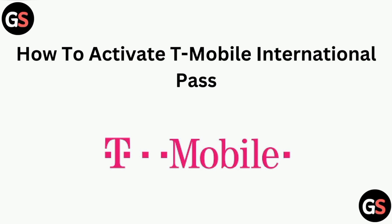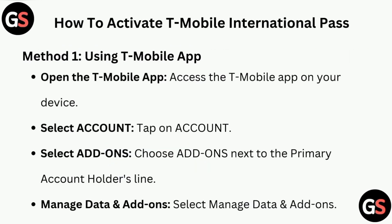Hi all. In today's video, we will guide you through how to activate T-Mobile International Pass. Method one is using the T-Mobile app. Open the T-Mobile app and access it on your device.